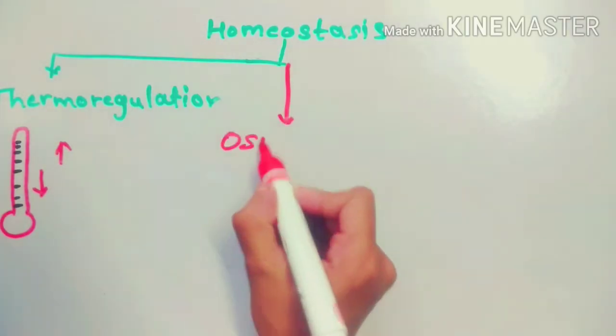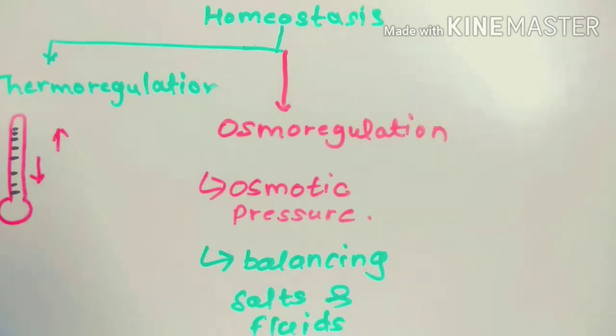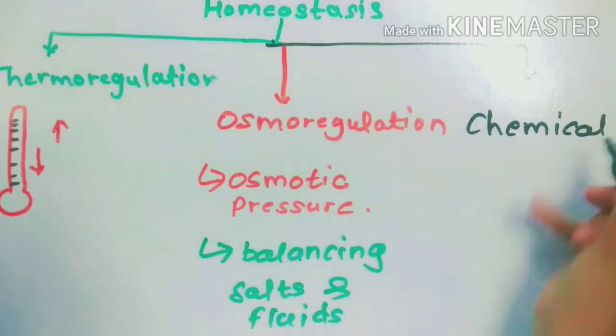But there are various other examples of homeostasis like osmoregulation, which is the process of maintaining a constant osmotic pressure inside the body by balancing the concentration of fluids and salt.